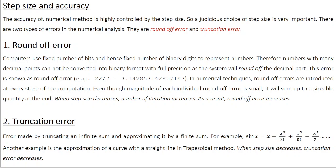Coming to round-off error first: as we know, computers use a fixed number of bits and hence a fixed number of binary digits to represent numbers. Therefore, numbers with many decimal points cannot be converted into binary format with full precision, as the system will round off the decimal part. The error associated with this rounding is known as round-off error.